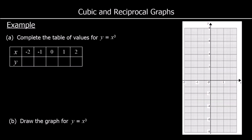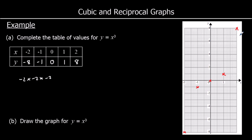Now let's look at a cubic graph. Complete the table of values for y equals x cubed. I'm going to do it without a calculator. Negative 2 cubed: negative 2 times negative 2 times negative 2 — a negative times a negative is positive, then a positive times a negative is negative — so it's −8. Negative 1 cubed is −1. 0 cubed is 0. 1 cubed is positive 1, and 2 cubed is positive 8. Let's plot these: (−2, −8), (−1, −1), (0, 0), (1, 1), (2, 8) — and we'll join it up with a curve.